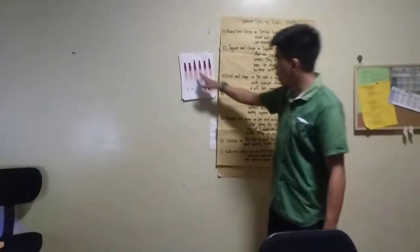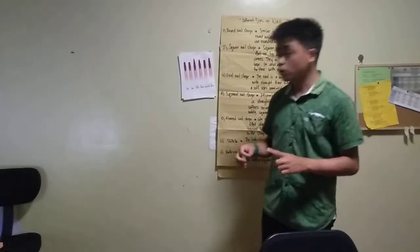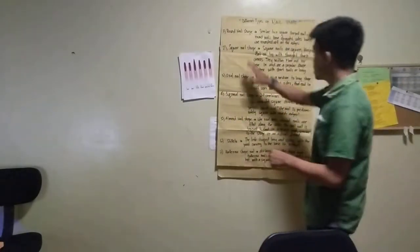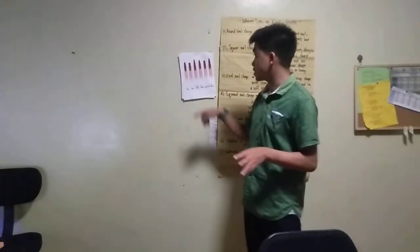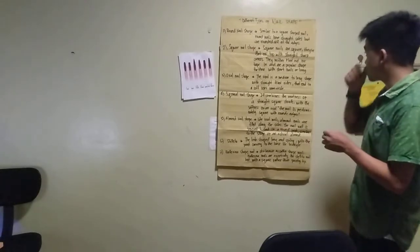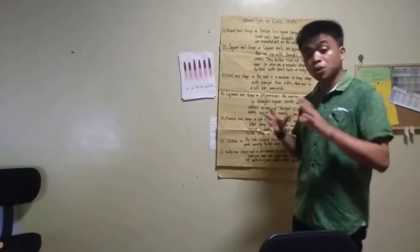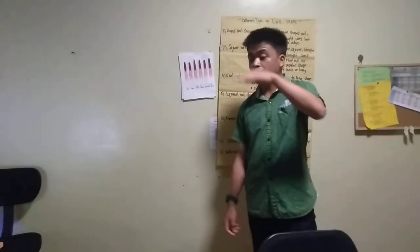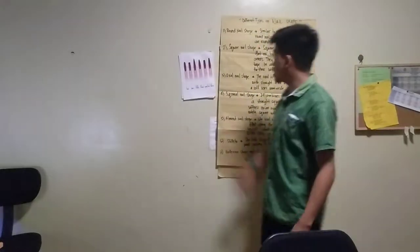The next one is the square nail shape. Square nails are straight on the sides and the edge forms a square. The square nail shape is flat on the top with straight sharp corners. It is a popular shape for those with short or long nails — you can cut it into a square nail shape where the edge is flat.